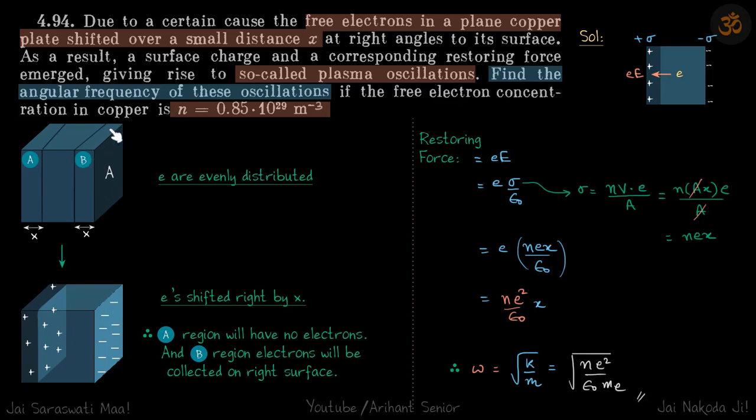All these electrons in this region will get collected here. Since all electrons are shifting towards the right, the density in between will remain the same. However, the left region will be devoid of electrons because all these electrons have moved towards the right.